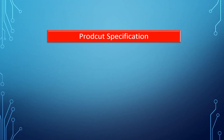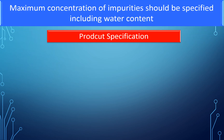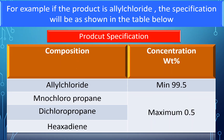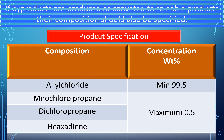Product specification: The product specification should state the minimum concentration of the product for guarantee. Maximum concentration of impurities, including water content, should be specified. For example, if the product is allyl chloride, the specification will be as shown in the table. If by-products are produced or converted to saleable products, their composition should also be specified.